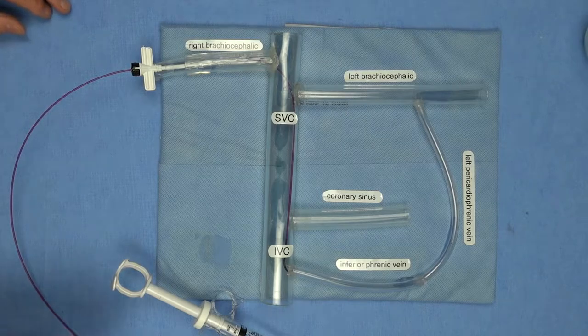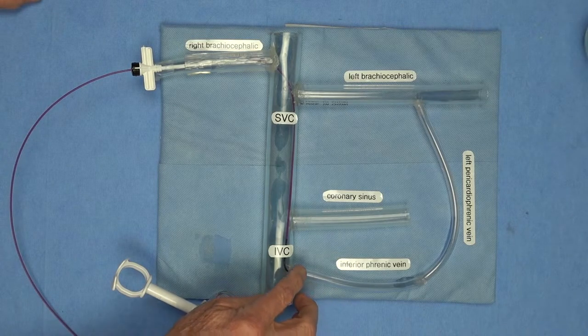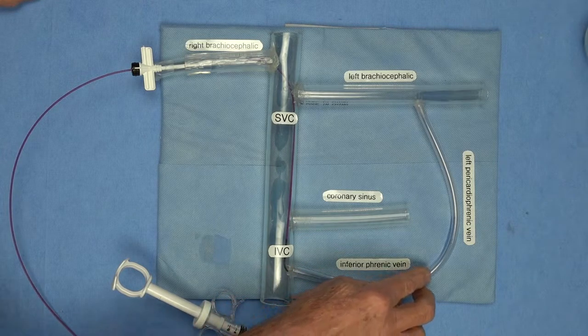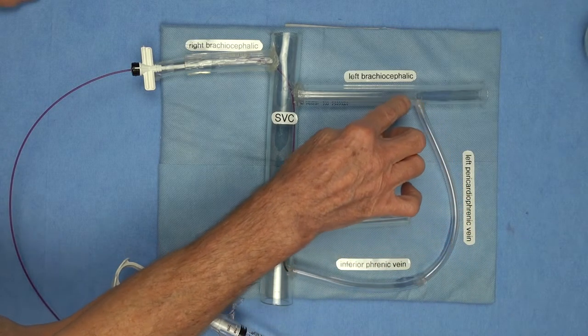And fortunately, it turns out that in many patients, the inferior phrenic vein actually feeds back up into the left pericardiophrenic vein.